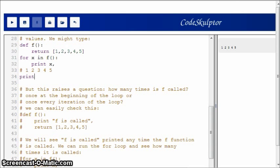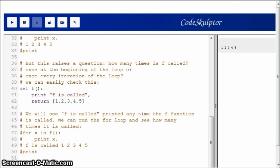But this raises an interesting question: how many times is f actually called? Are we calling f once at the beginning of the loop, or does it call f every iteration of the loop? What I want to show you is that it's easy to check this. I modified f so that it includes a print statement, and then it just returns the list as it did before. What we see is that in the output we see 'f is called', and then 1, 2, 3, 4, 5. If f was being called every iteration, then we would see 'f is called' printed 5 times. We know from this that f is only called once.